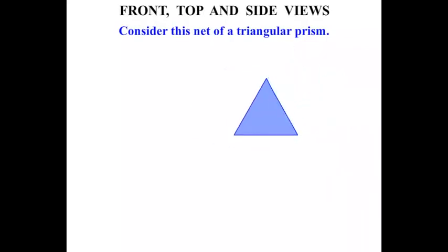And turning it around, looking directly at the front, what do we see? We just see a triangle. So that would be the front view of a triangular prism.